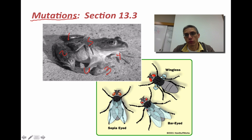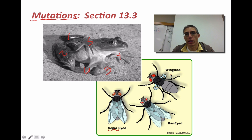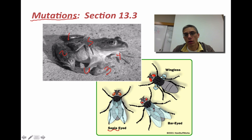Down here, we have three examples of fruit flies. Instead of having the normal-eyed fruit fly, we actually have three varieties: a sepia or orange-eyed fruit fly, a bar-eyed fruit fly where the eyes are a slightly different shape, and a wingless fruit fly that has wings very significantly reduced. All three are a result of a mutation that occurred in the DNA of that fruit fly — a deviation from the normal.